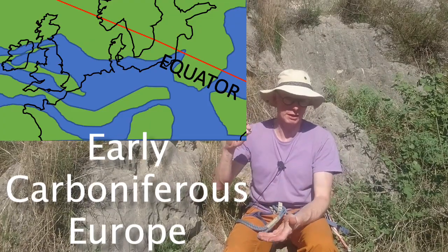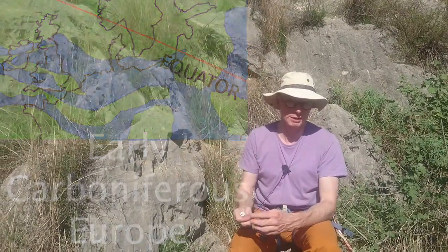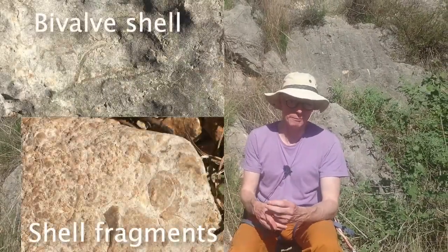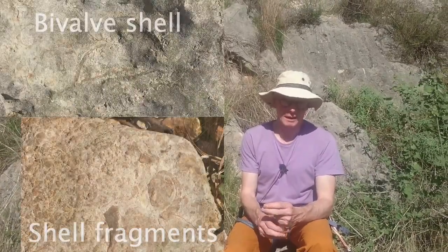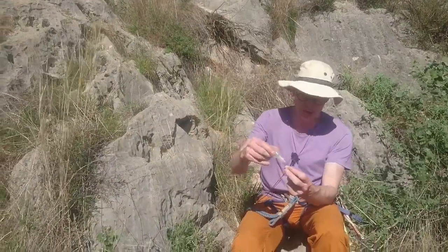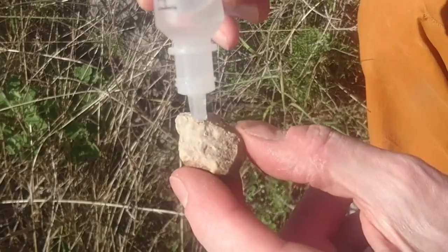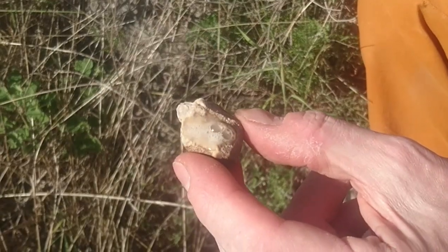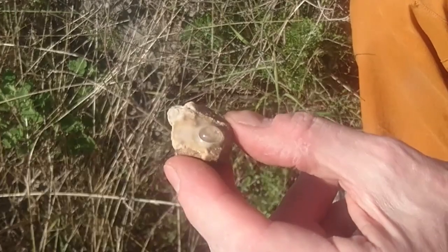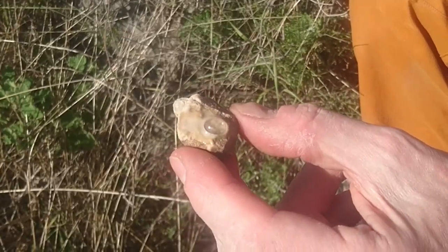Further back in time during the Carboniferous, where Europe was at the time, was all flooded as well. So we get these thick tropical sea deposits, and they're made of little bits of shell, which is calcium carbonate. Calcium carbonate is actually quite unstable, so if I put a little bit of hydrochloric acid on it, you can see it fizzes like crazy.